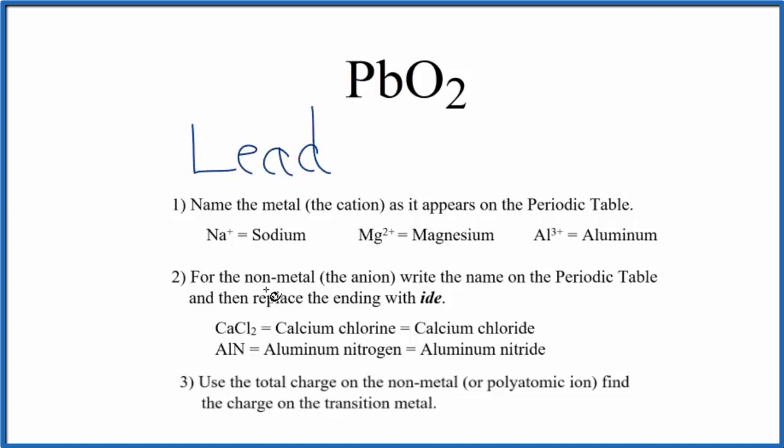And then we'll write the name of the nonmetal as it appears on the periodic table. O2, that's oxygen, lowercase o, and we're going to replace the ending with IDE. So we write IDE, and at this point we have the name lead oxide for PbO2.